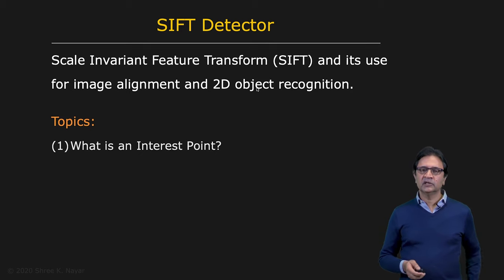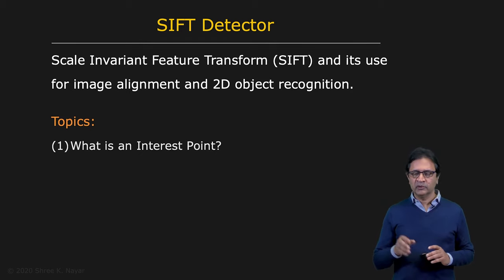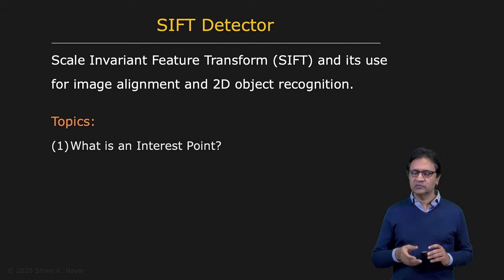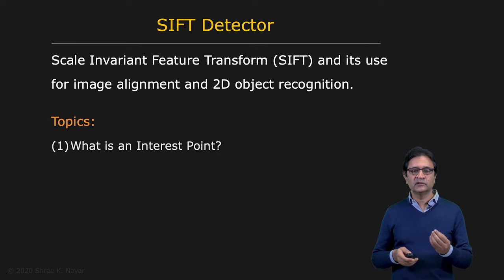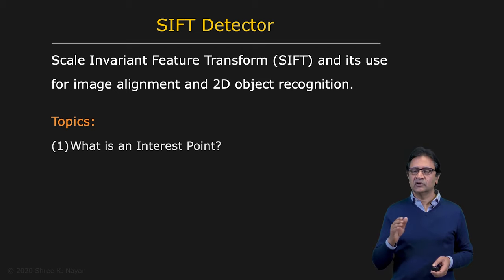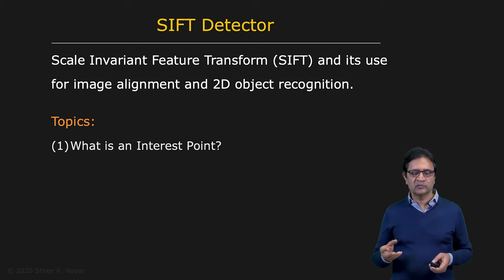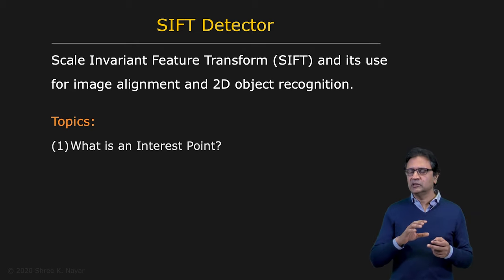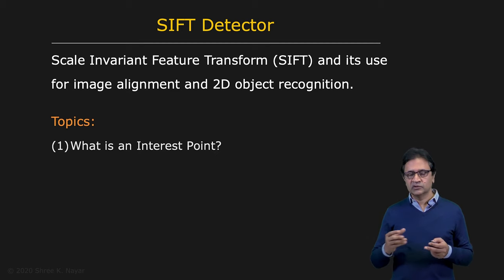We're going to start by asking the question: what is an interest point? This is an area of research in computer vision with a long history. The term interest point really came from Hans Moravec back in the late 1970s — he was looking at interesting points in the context of robot vision. Since then, there has been a lot of work in this area, establishing that edges and corners are not really interesting enough points for many applications. We need things that are a little more descriptive, and what has been realized over time is that some notion of a blob, which has some local appearance within it, is potentially a very good interest point for matching.